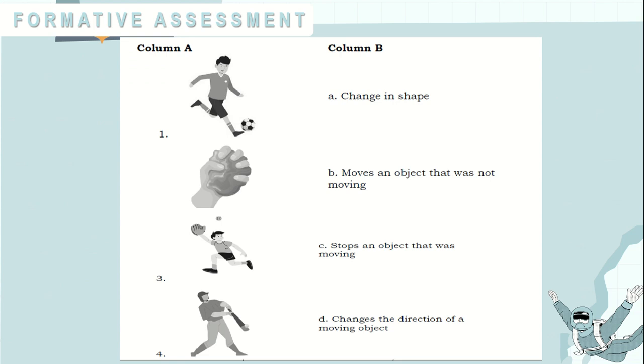Here are the choices for column B. A: Change in shape. B: Moves an object that was not moving. C: Stops an object that was moving. And D: Changes the direction of a moving object.